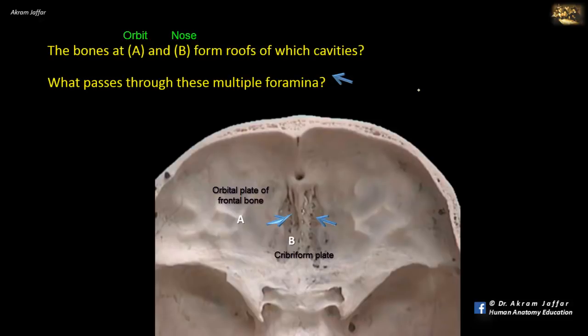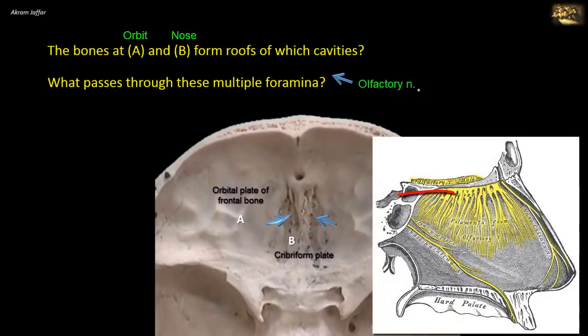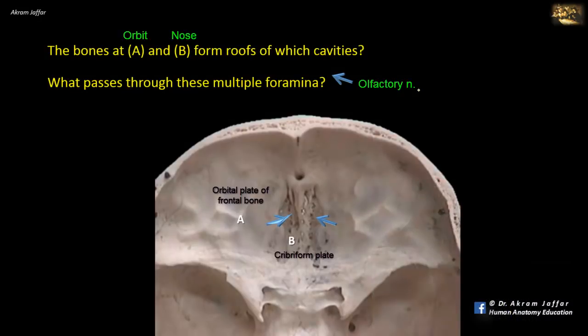The multiple foramina shown in the cribriform plate — hence the name cribriform, meaning sieve-like — are produced by the bundles of nerves constituting the olfactory nerve from the olfactory area of the nose. These pierce the cribriform plate of the ethmoid bone to gain access to the anterior cranial fossa. Fractures here might result in anosmia, loss of sense of smell, due to injury of the olfactory nerves, and may also result in leakage of cerebrospinal fluid through the nose, a condition called CSF rhinorrhea.